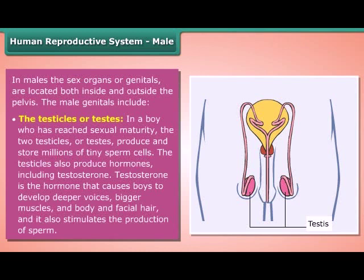The testicles also produce hormones, including testosterone. Testosterone is the hormone that causes boys to develop deeper voices, bigger muscles, and body and facial hair. It also stimulates the production of sperm.